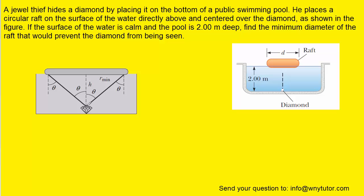So we want any light ray that's bouncing off of the diamond to be obscured or blocked by the raft. That way anyone outside the pool looking in would not actually be able to see the diamond because all of the light that's bouncing off of it would be blocked by the raft.